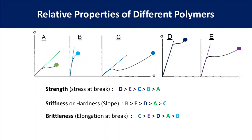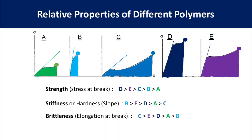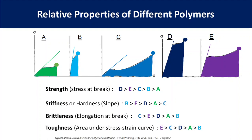In terms of identifying soft and hard material, sample C shows the lowest initial slope, so it is a soft material. Among all samples, which is the toughest? Toughness is the material's ability to absorb energy before break, measured by the area under the stress-strain curve. Samples C, D and E appear to be very tough materials. By calculating the actual area we can identify which is toughest among them. It is clear from this example that the strongest material is not necessarily the toughest, and a softer material can be the strongest or toughest material.